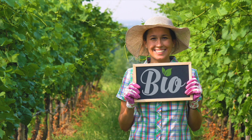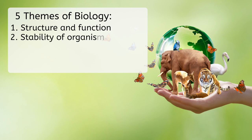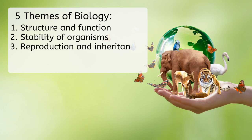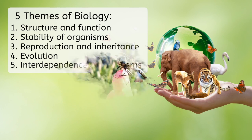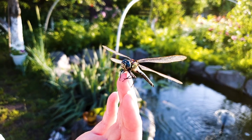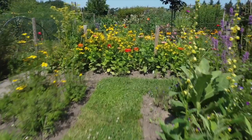The prefix bio always means having to do with living things. We've looked at several major themes of biology at this point in the course, including structure and function, the stability of organisms, reproduction and inheritance, and evolution. We are working towards that last theme, interdependence of organisms. But before we can see how they are interdependent, we need to study the diversity that exists within organisms. Diversity means variety or different forms.